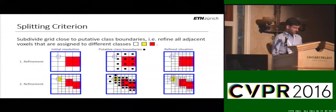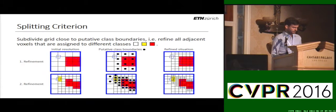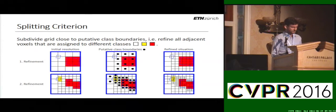The last missing element is the splitting criterion, which tells us which voxels are likely to contain surfaces. In our case, we simply split all neighboring voxels that are assigned to different classes. This is shown here for two different resolutions: we look for all neighboring voxels assigned to different classes, highlight them with black dots in the middle column, and split them in the right column.